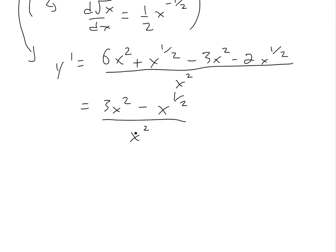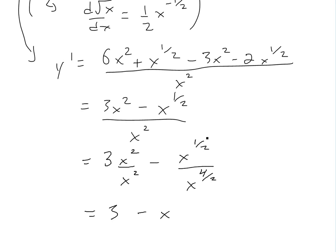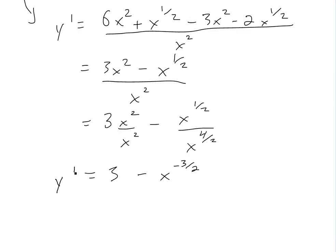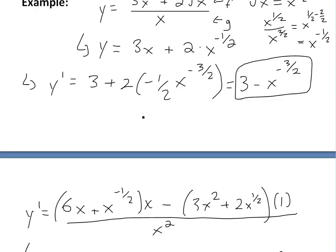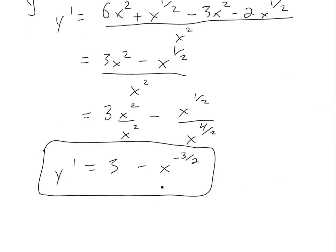Now we divide both terms by x squared. For 3x squared divided by x squared, we get 3. For x to the one-half divided by x squared — writing x squared as x to the four-halves to get a common denominator — we subtract: one-half minus four-halves equals negative three-halves. So we get 3 minus x to the negative three-halves, which is exactly the same answer we got using the simplified method.